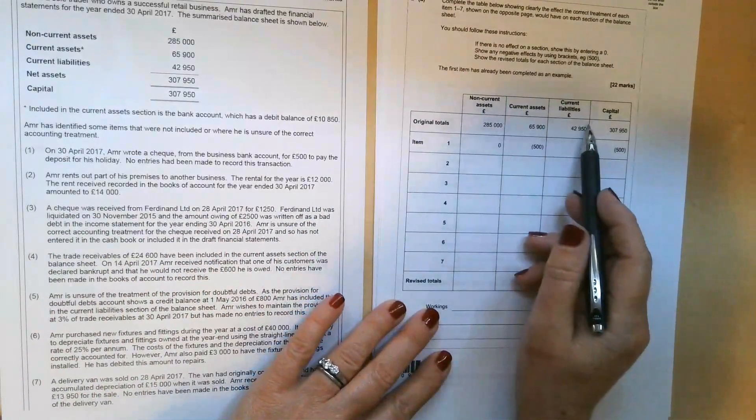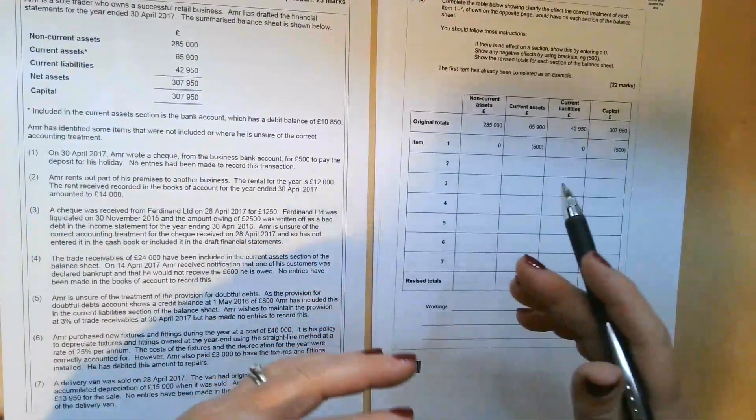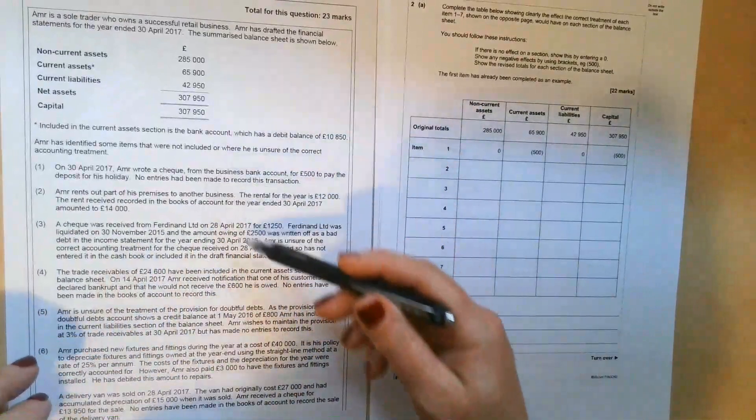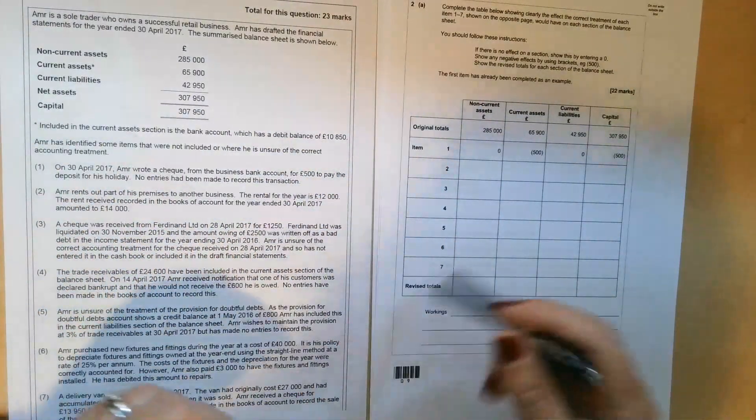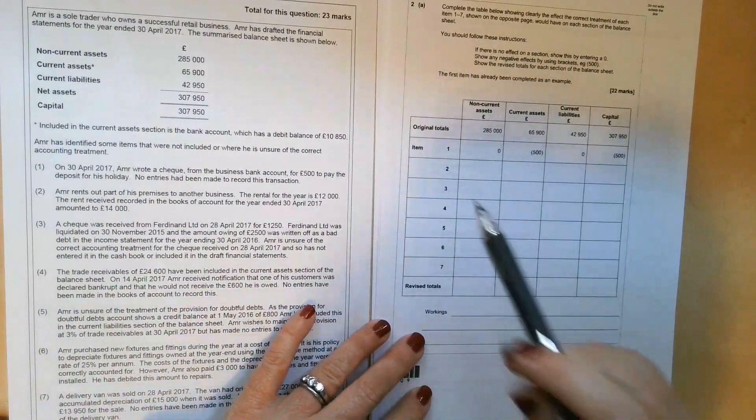This one is more concerned with the statement of financial position, but rather than getting you to draft one, it's actually given you a list of corrections, errors that you're doing, things that have been omitted, and then asked you to do this in a sort of table format.